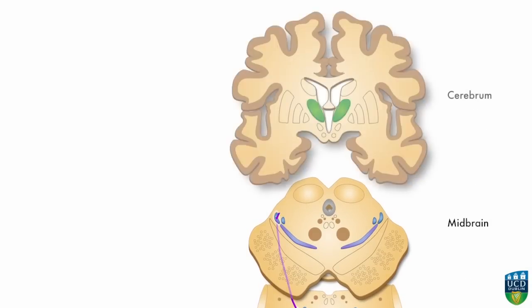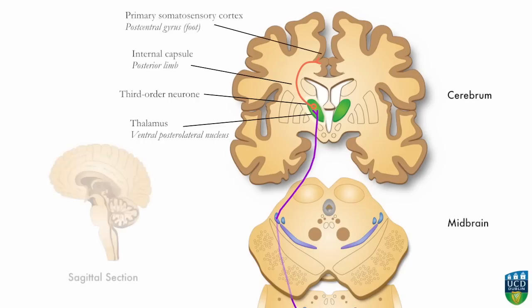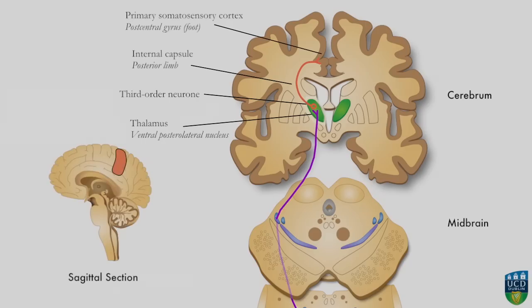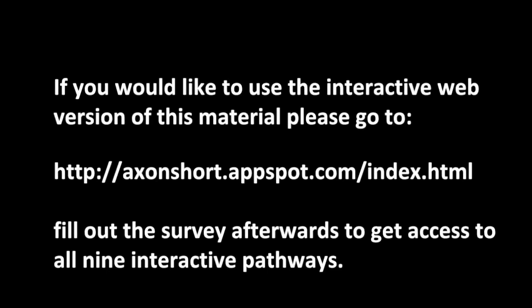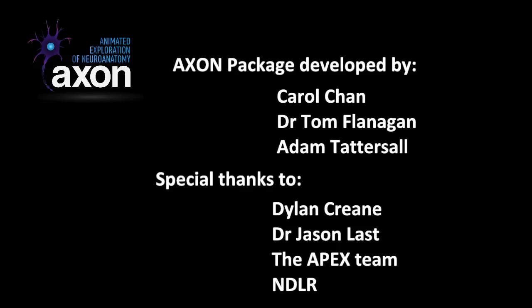The axon of the second order neuron terminates in the thalamus, synapsing on the third order neurons that then carry the impulse to the appropriate area of the primary somatosensory cortex.